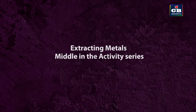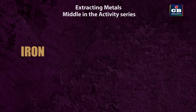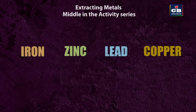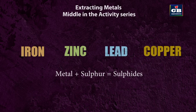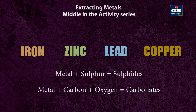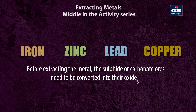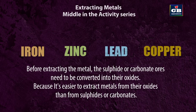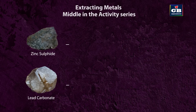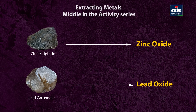Metals like iron, zinc, lead, and copper are found in the middle of the reactivity series. They are usually found in nature as sulfides (combined with sulfur) or carbonates (combined with carbon and oxygen). Before extracting the metal, sulfide or carbonate ores need to be converted into their oxides, because it is easier to extract metals from oxides. This conversion is done by roasting and calcination methods.